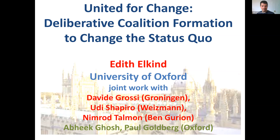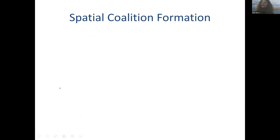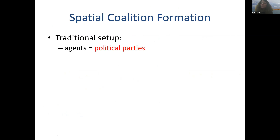So this is a paper that combines voting and coalition formation. It's algorithmic game theory and artificial intelligence, but here we try to think about how agents could form coalitions, and these agents could be human or artificial. So the basic setup we are going to be working with is the setup of spatial coalition formation, which is something that is very well studied and understood in political science and game theory. I'll first describe the traditional setup, and then I'll explain how what we do differs from that.